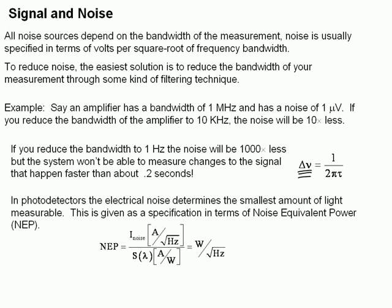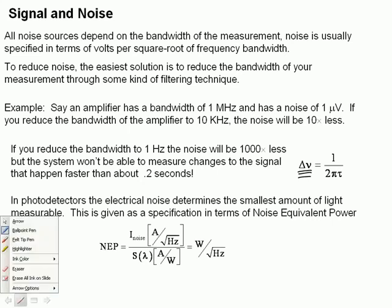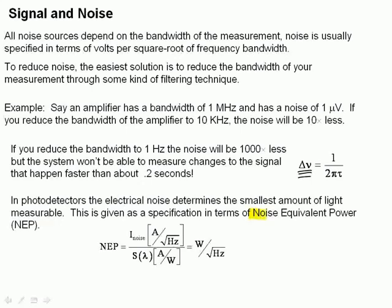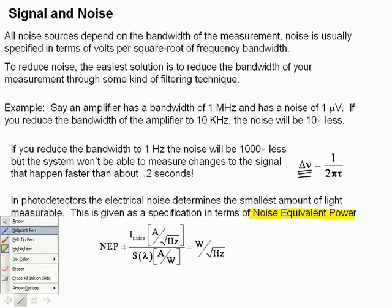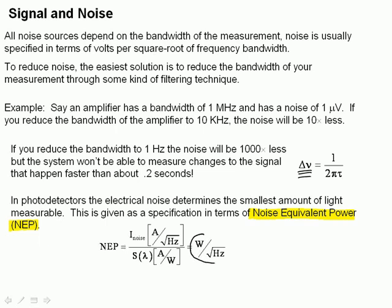Another thing to notice is that oftentimes when you look at photodetectors, you have a specification given in terms of noise-equivalent power, or NEP. The noise-equivalent power of a photodetector is defined to be the amount of noise current in terms of amps per square root of hertz, divided by the sensitivity we talked about when we looked at photomultipliers and photodiodes. When we divide the noise current by the sensitivity, we get the noise-equivalent power, which is given in terms of watts per square root of hertz.